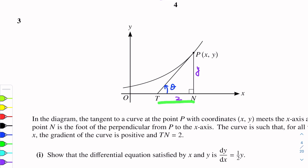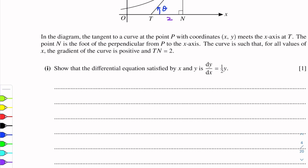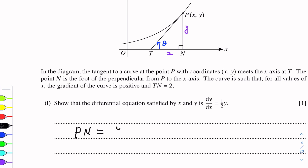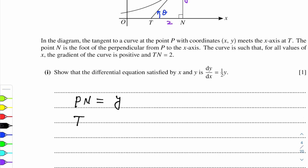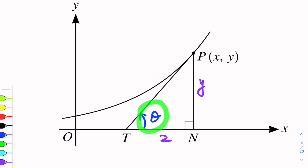TN is equal to 2 and the side PN is y. If we take the tangent of this angle theta, that will give us the gradient of this line. In this right triangle, PN is y and TN is equal to 2. Tan(theta) will be perpendicular over base, so tan(theta) will be y over 2.